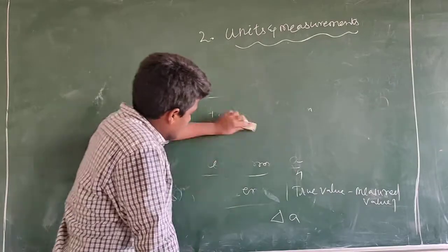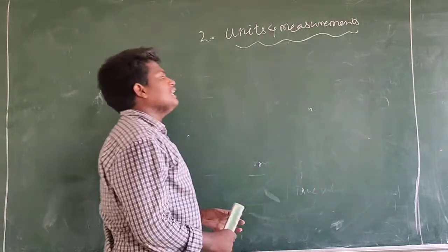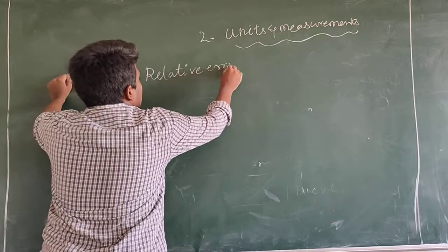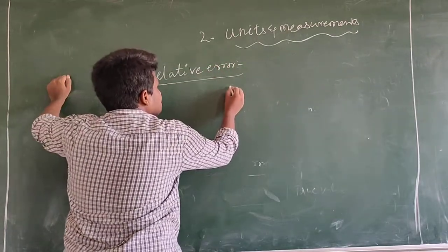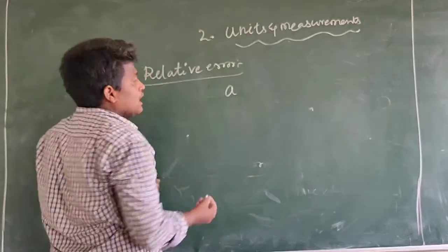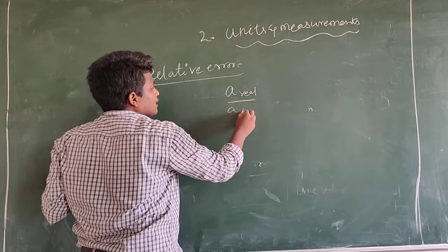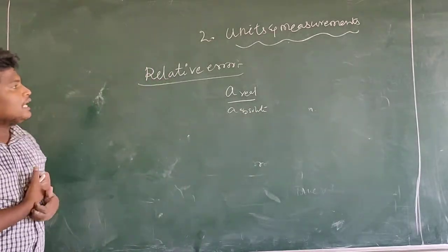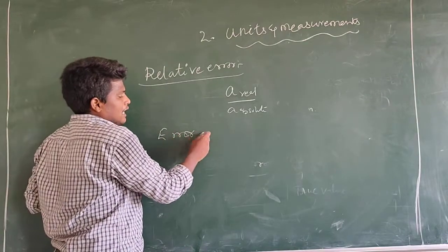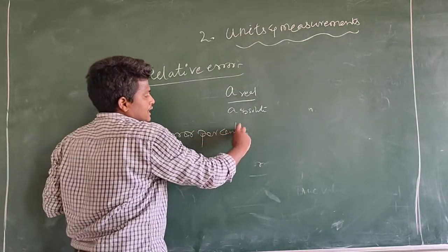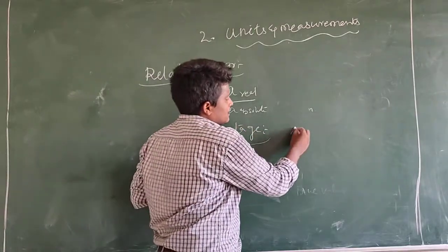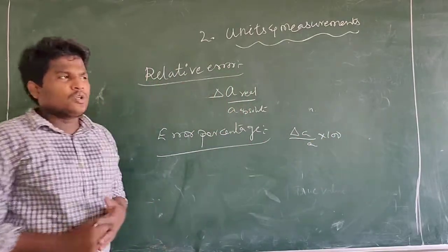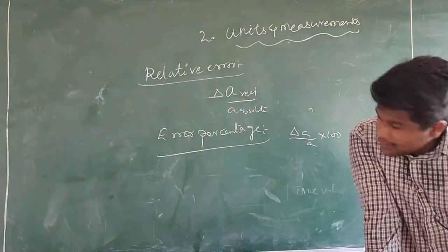Fourth one: relative error. Relative error is the relation between the real error, or absolute error, divided by the absolute error. And the next important one: error percentage. Error percentage is the relative error multiplied by one hundred percent.